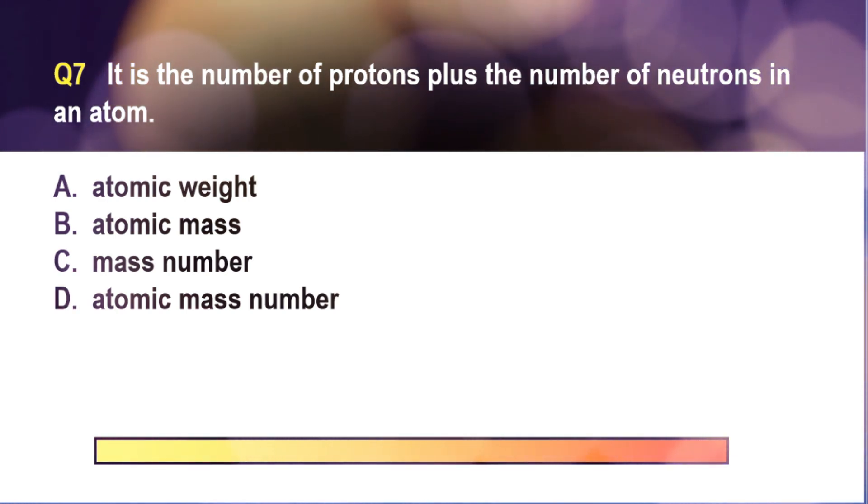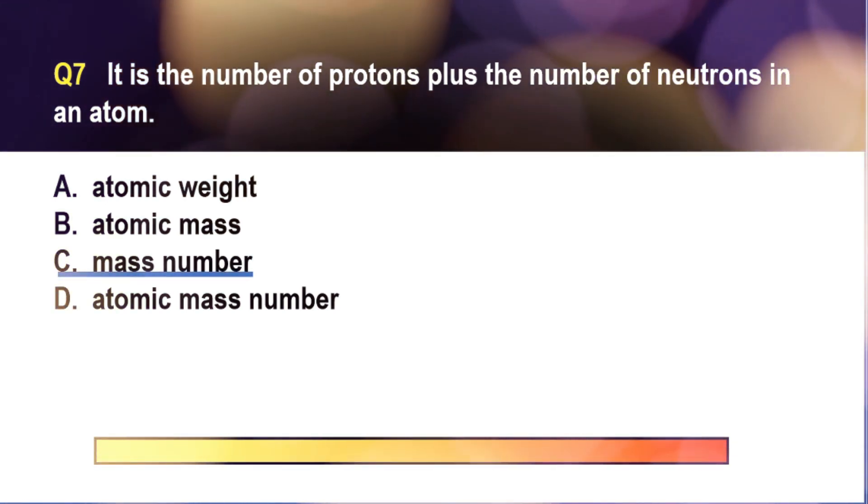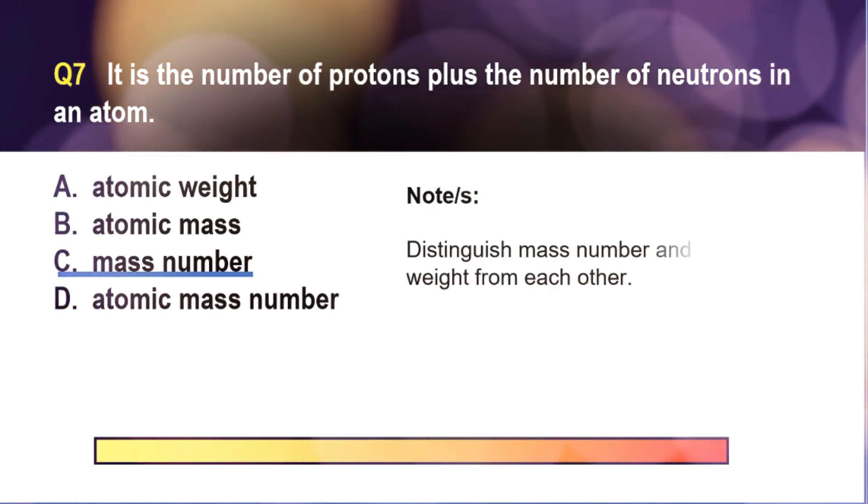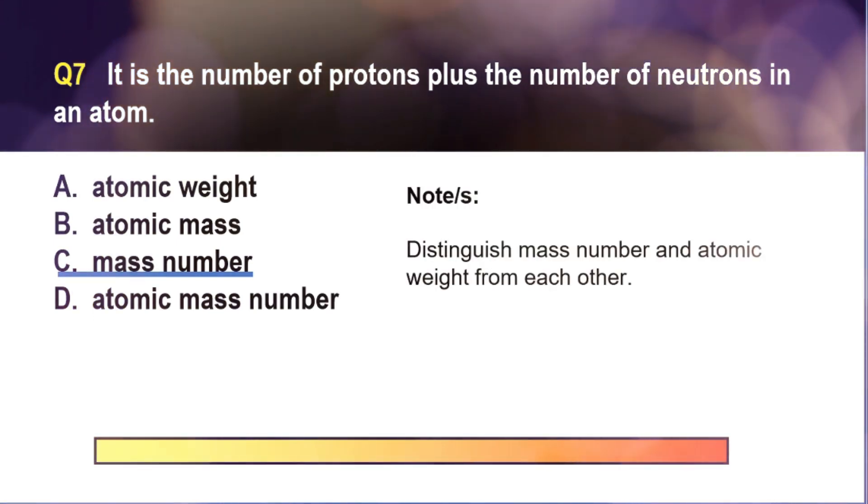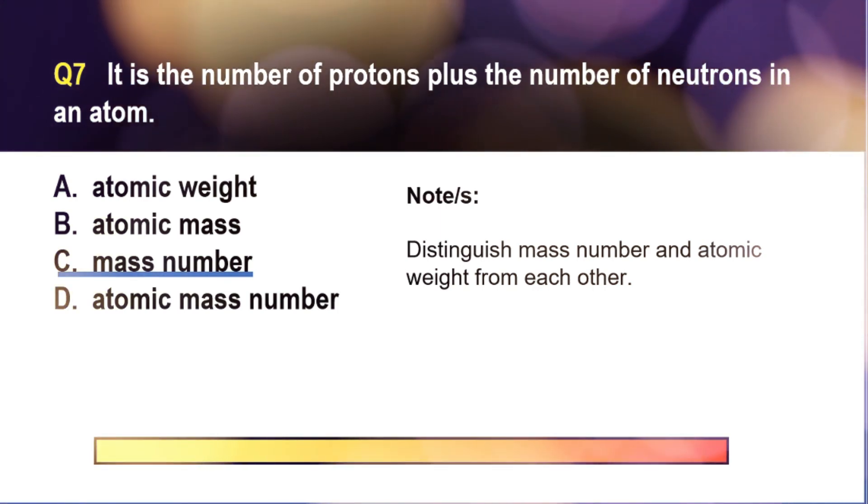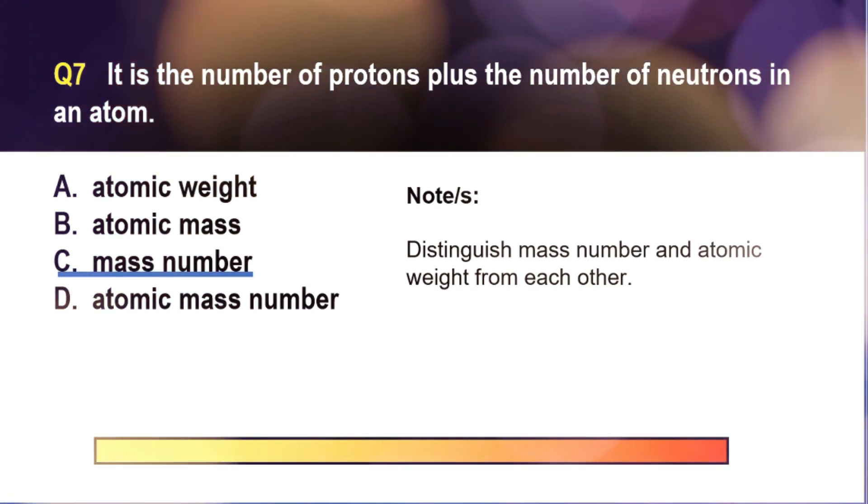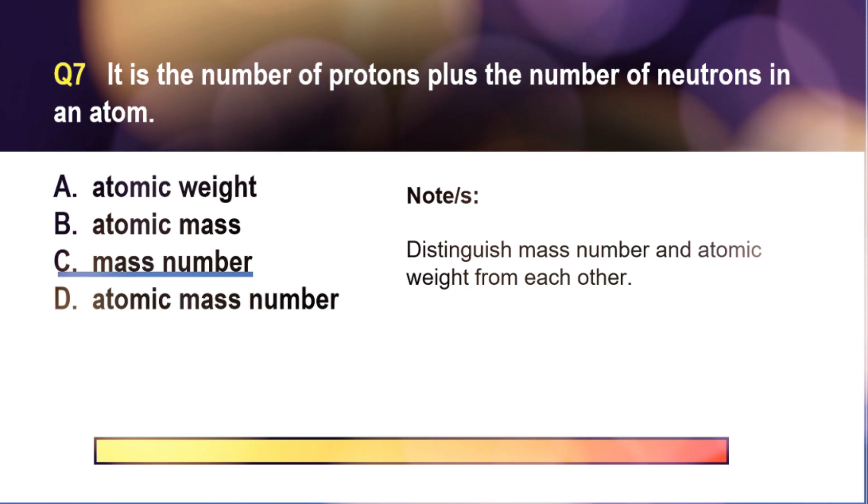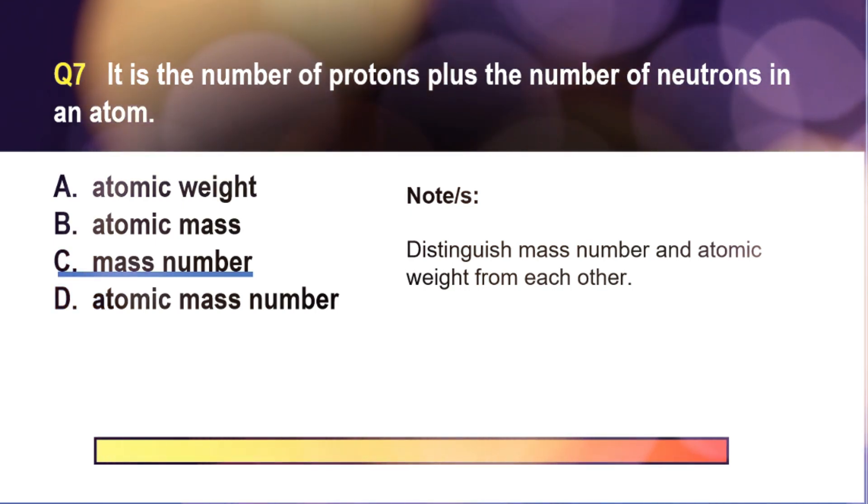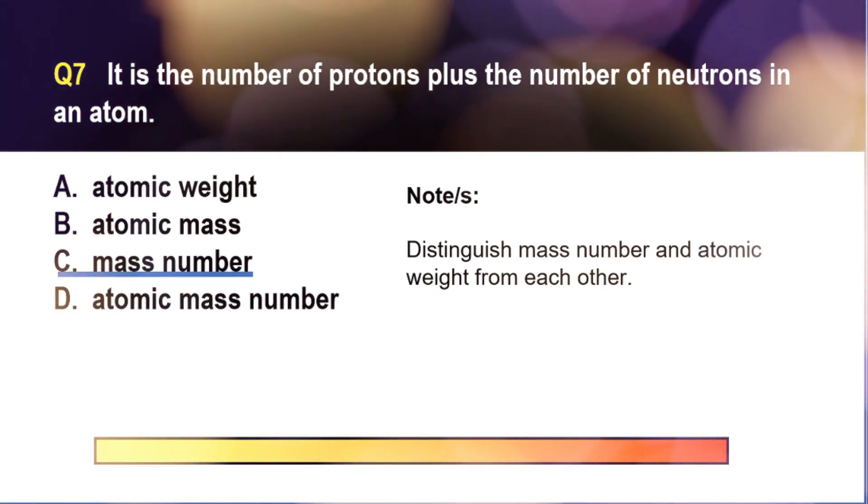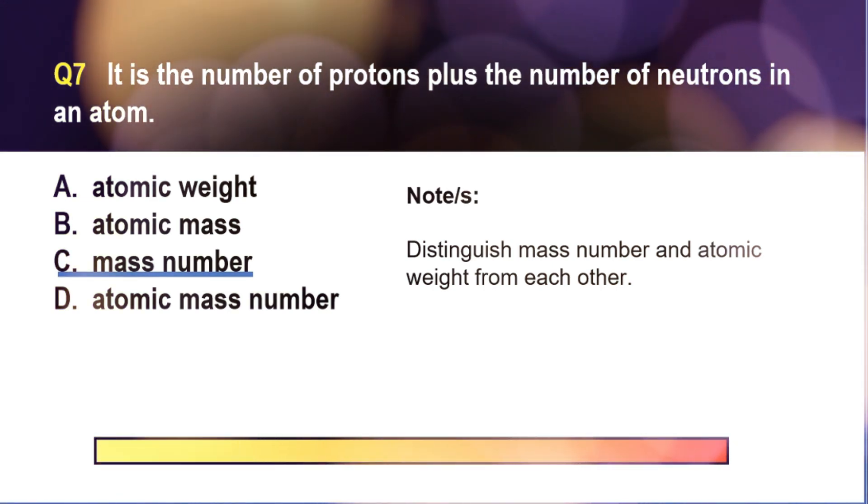The correct answer is letter C. Many students still get confused between atomic weight and mass number, which is understandable. Mass number is different from atomic weight. Mass number refers to the number of protons plus number of neutrons in the atom, and it is a whole number. On the other hand, atomic weight takes into account the isotopes of an element.